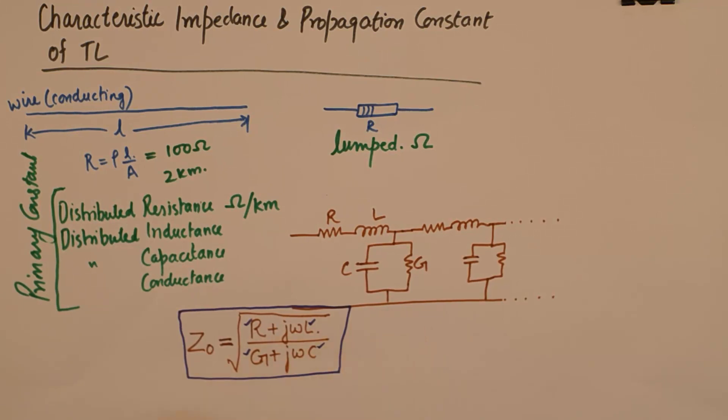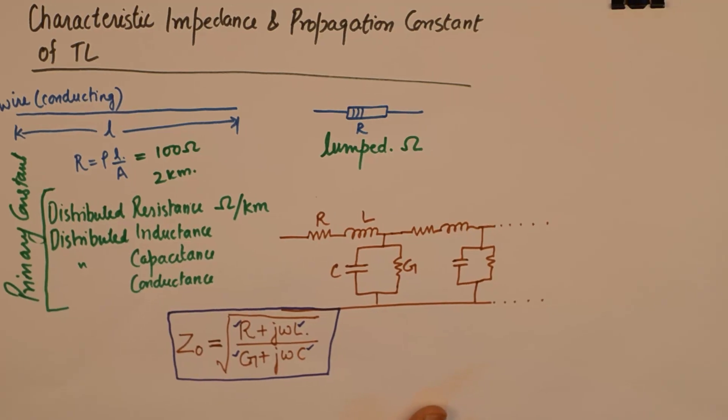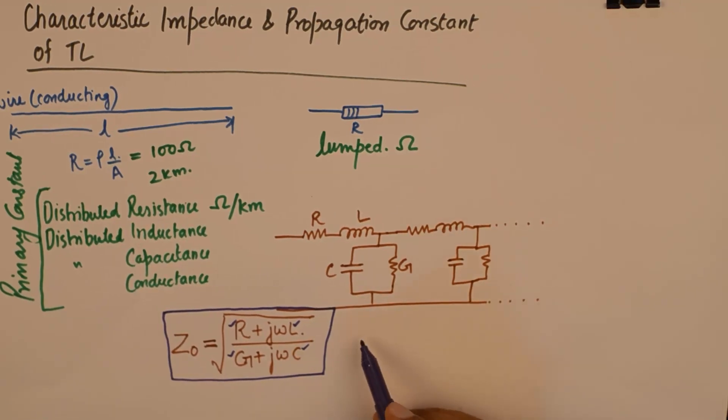Now, if you know the values of these primary constants in real or practical life or in a numerical, then you would be able to calculate the value of Z0, characteristic impedance. How much impedance, how much impedance is being offered by the transmission line per unit length to the flow of the sinusoidal signal which it intends to carry.